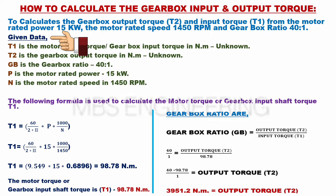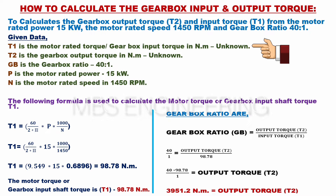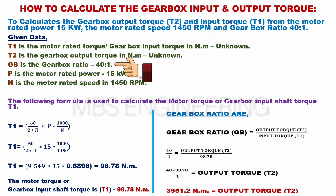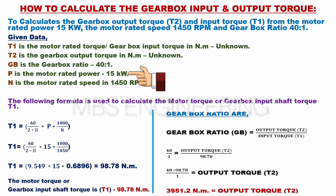Given data: T1, the motor rated torque or gearbox input torque in newton meters, is unknown. T2, the gearbox output torque in newton meters, is unknown. GB, the gearbox ratio, is 40 to 1. P, the motor rated power, is 15 kilowatts. N, the motor rated speed, is 1450 RPM.